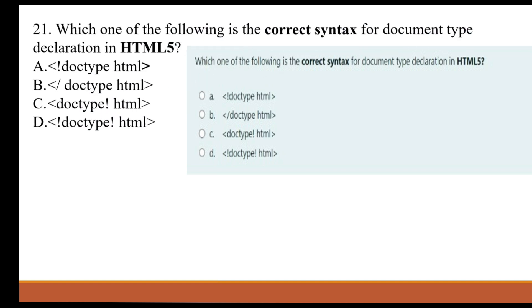Which one of the following is the correct syntax for document type declaration in an HTML file? A, B, C, or D.